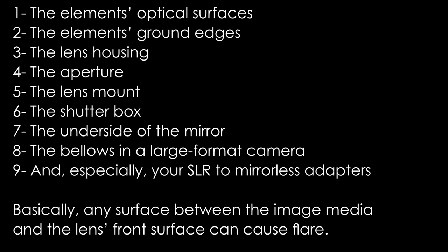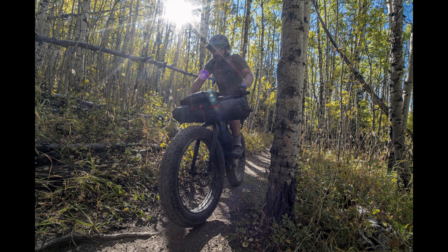Flare has many places where it can start: the element's optical surfaces, the element's ground edges, the lens housing, the aperture, the lens mount, the shutter box, the underside of the mirror, the bellows in a large format camera, and especially your SLR to mirrorless adapters. Basically, any surface between the image media and the lens's front surface can cause flare under the right circumstances.